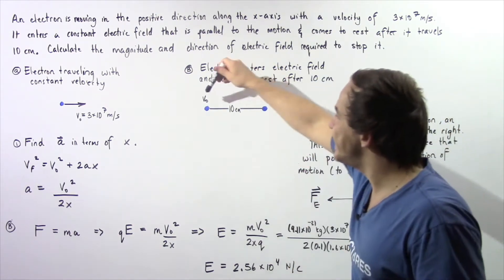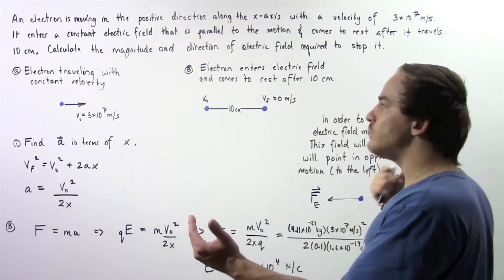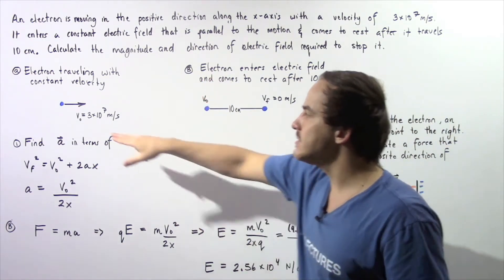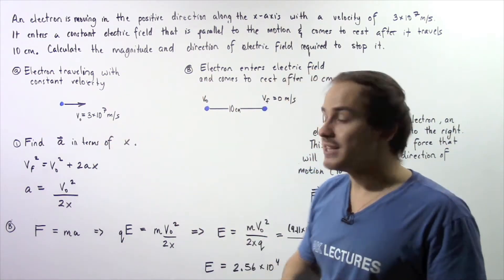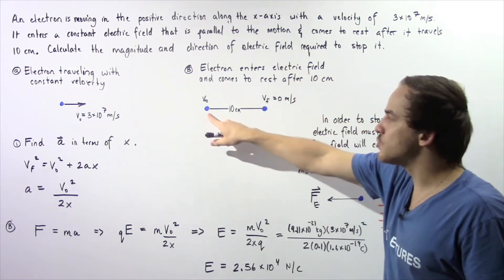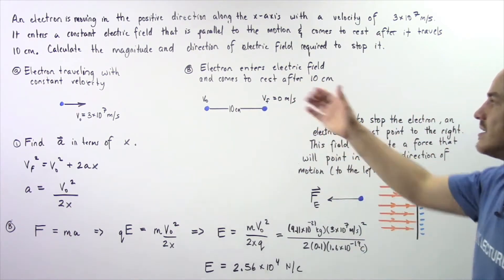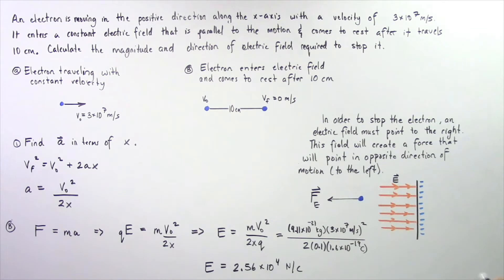Our initial velocity right when it enters the constant electric field is given by this magnitude, and the final velocity after it travels 10 centimeters is 0 meters per second.